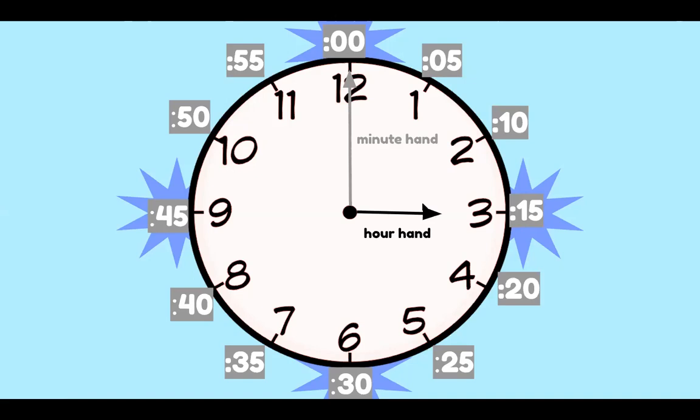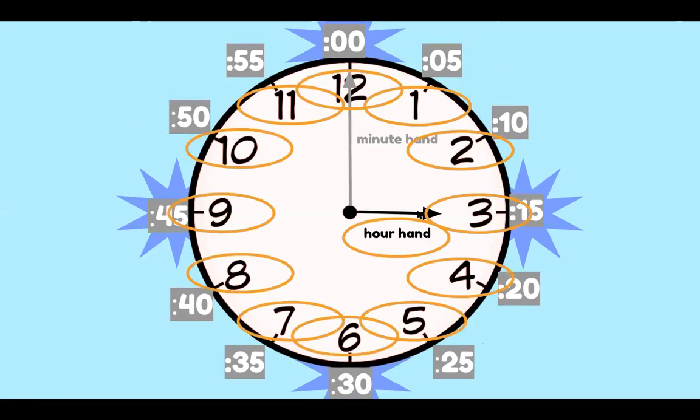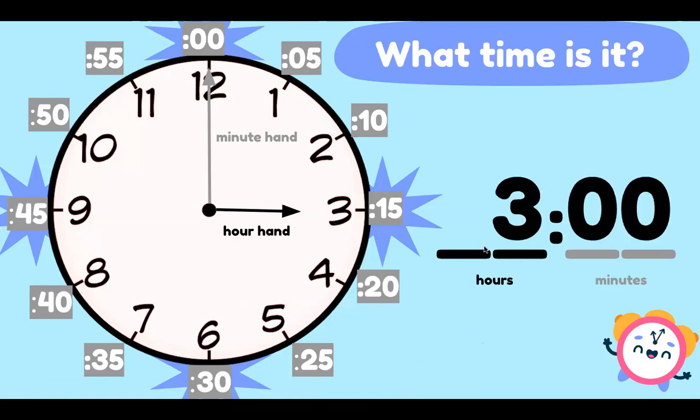The hour hand is the short hand. And what numbers are we looking for for the hour hand? The black numbers. These are the numbers that are always on our clock. So the minute hand, we're looking at all the gray numbers and that's the long hand. And the hour hand is the short hand. And we're looking at all the numbers on the inside of the clock. Now what time is it? Remember the minute hand, we're looking at the gray numbers. And the hour hand is the black.